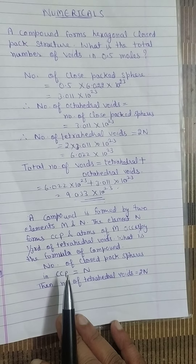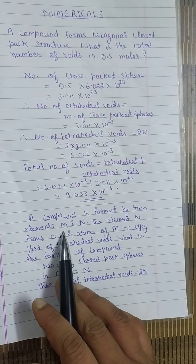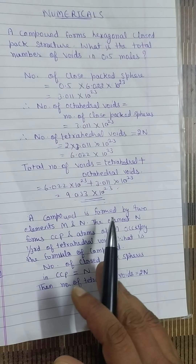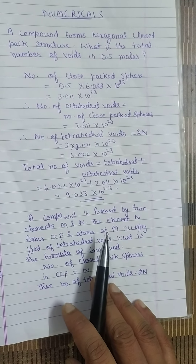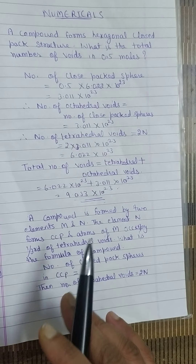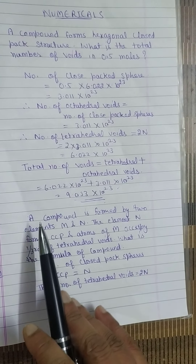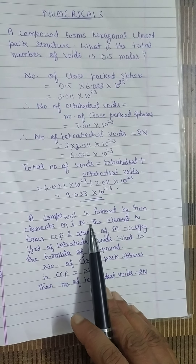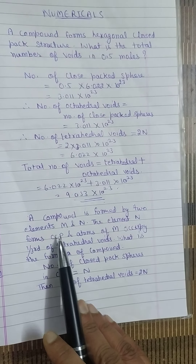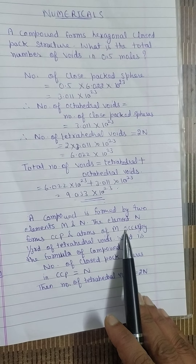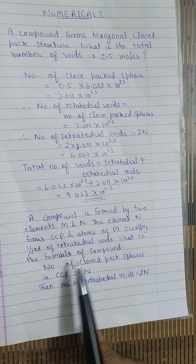There is another numerical: a compound is formed by two elements M and N. The element N forms CCP — cubic closed packing — and atoms of M occupy one-third of the tetrahedral voids. What is the formula of the compound?